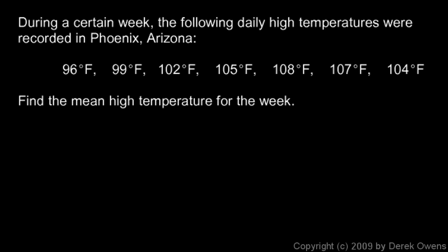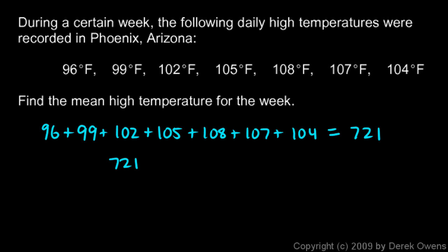We just have to average those numbers. Let's add them up: 96 plus 99 plus 102 plus 105 plus 108 plus 107 plus 104. All of that adds up to 721. To find the average, we take 721 and divide it by 7, and that works out to 103. So the average high temperature that week was 103 degrees Fahrenheit—pretty hot, but not unusual for Phoenix, Arizona.